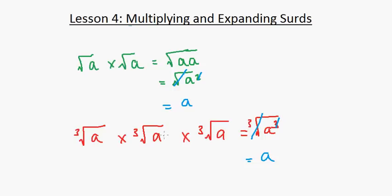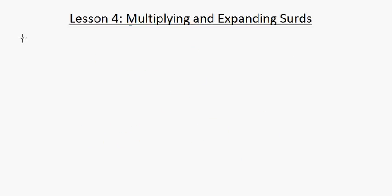So if the fourth root or fifth root is multiplied by itself that many times, it simplifies to the base number. This is why root 2 times root 2 equals 2 — that's the underlying explanation.